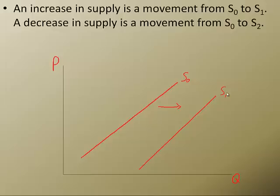Now a decrease in supply is moving from S0 to S2. So let me draw in an S2. That's going to be a shift to the left. And I will label that S2.